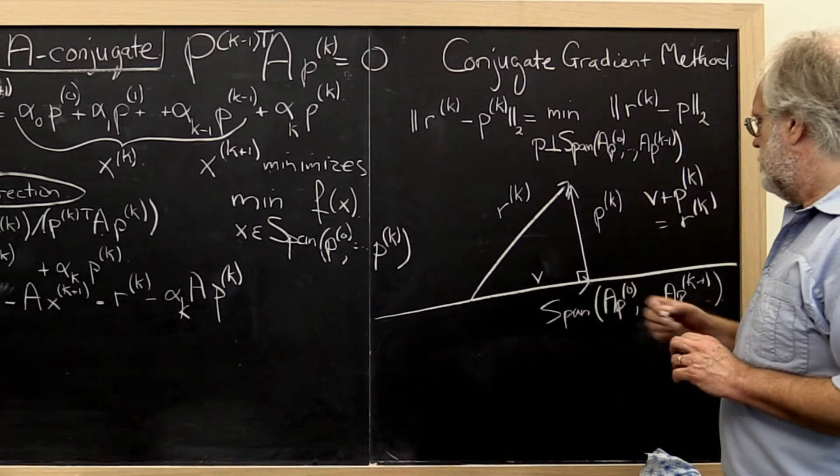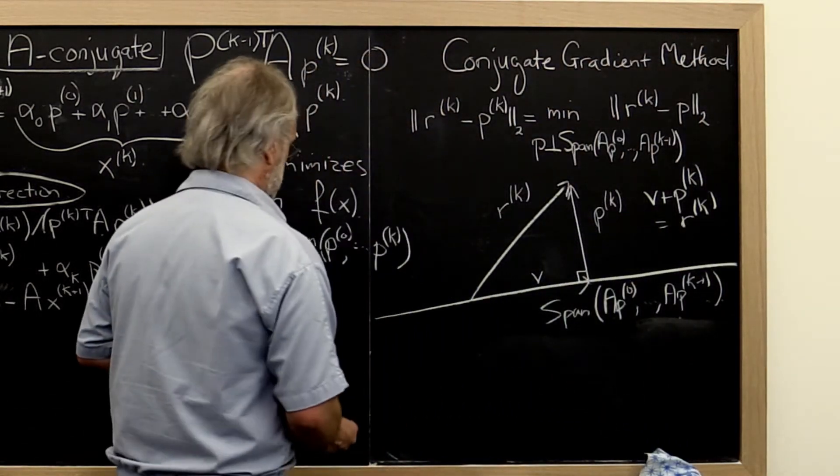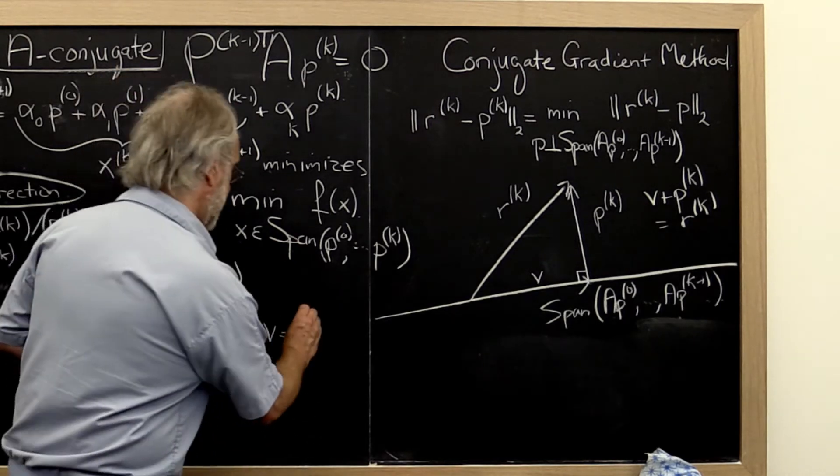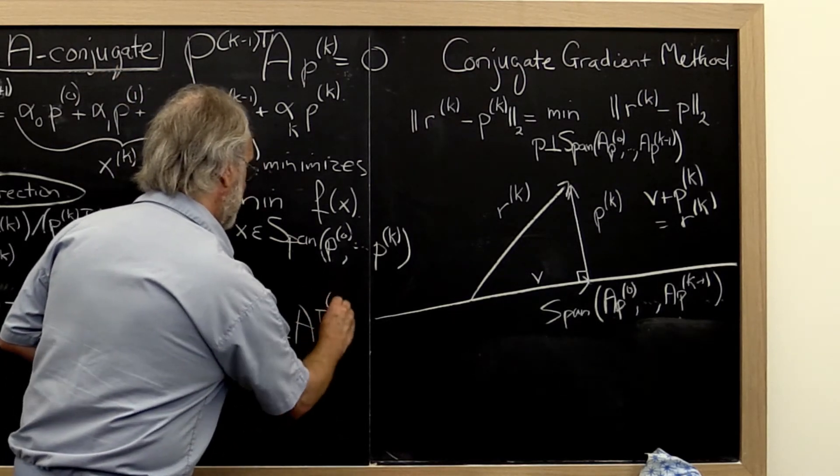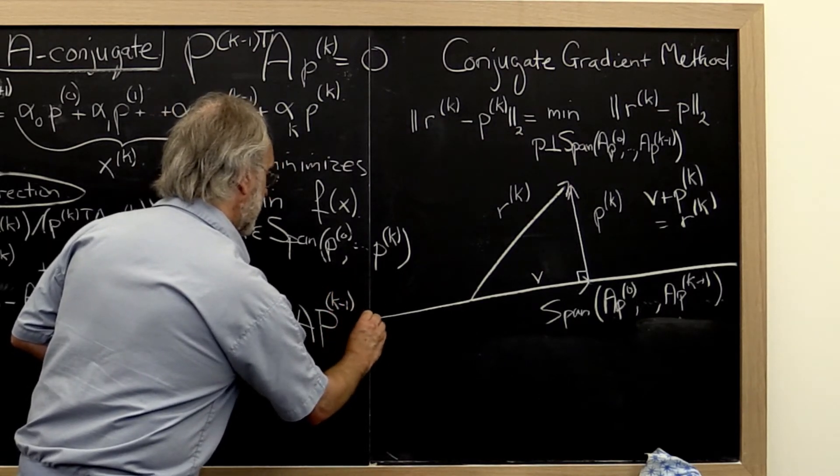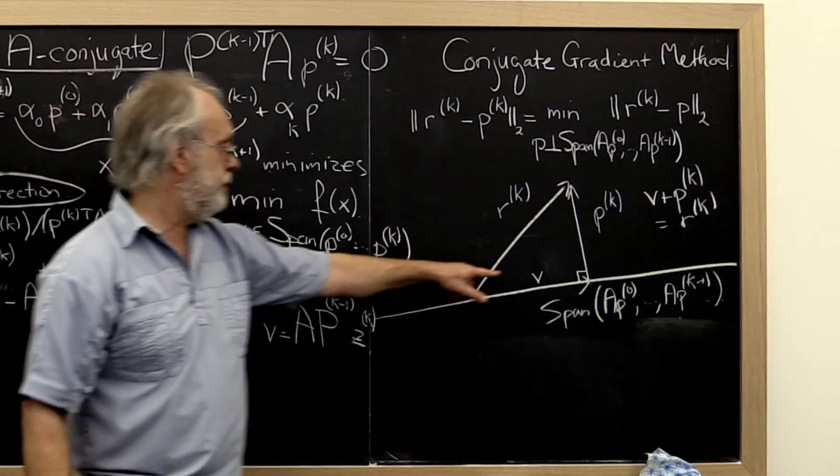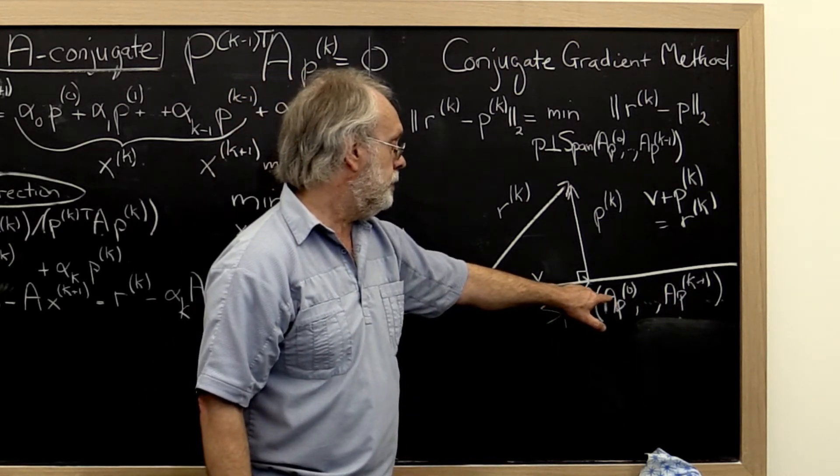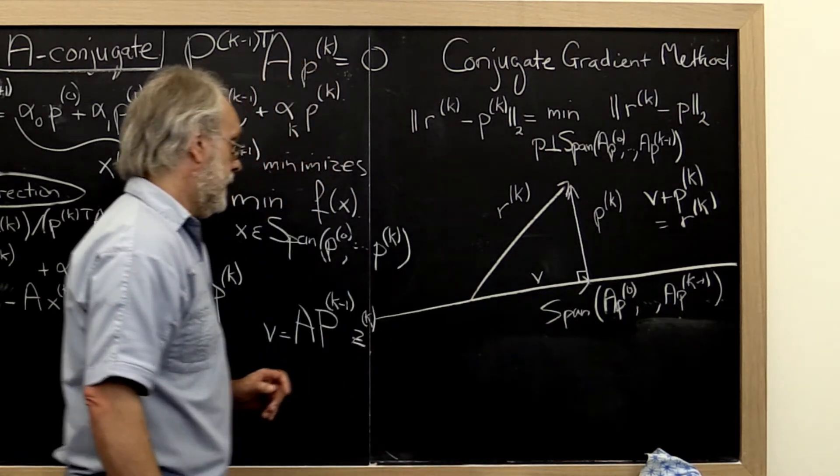Well, let's think this through a little bit. What this really says here is that our vector V can be written as A times our matrix Pk minus 1 times a vector, let's call it Zk. This here really captures that V must be a linear combination of A times the various search directions.